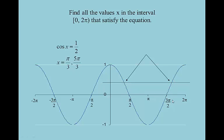We don't expect you to pull out the graph every time. We really want you to know the sine, cosine, and tangent of 30 degrees, 45 degrees, and 60 degrees — π/6, π/4, π/3 — so you're able to answer these. It really just comes down to which quadrant we're in. Cosine is negative in quadrant 2, negative in quadrant 3, and positive in quadrant 4. If I had said cosine x = negative 1/2, we'd have picked the 60-degree angle in quadrant 2 and quadrant 3.